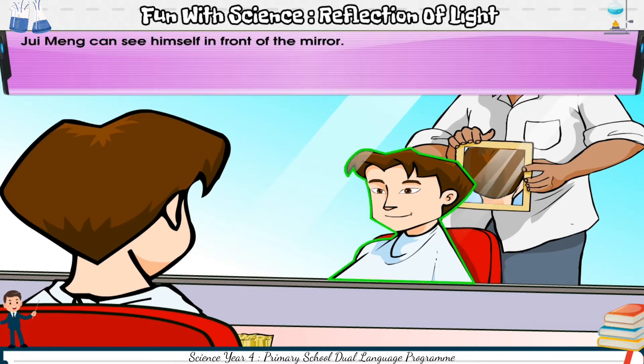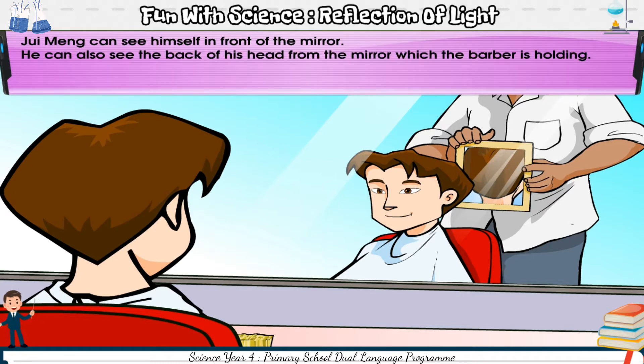Jui Ming can see himself in front of the mirror. He can also see the back of his head from the mirror which the barber is holding. Why do you think this happens? Think about this.